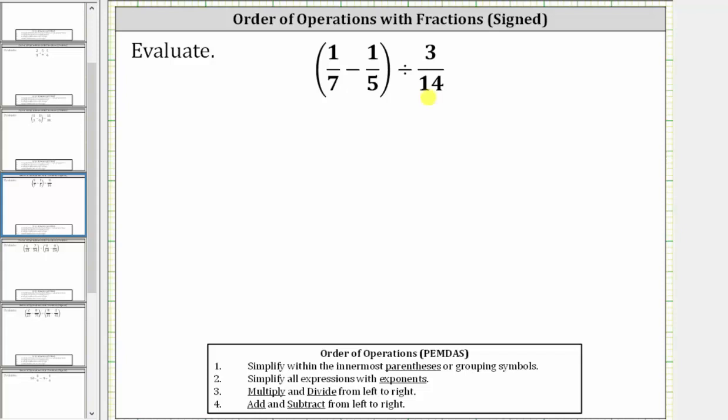We want to evaluate or simplify the given expression. Following the order of operations, the first step is to simplify within the parentheses, which means for our expression we begin by determining 1/7 minus 1/5 in the parentheses.